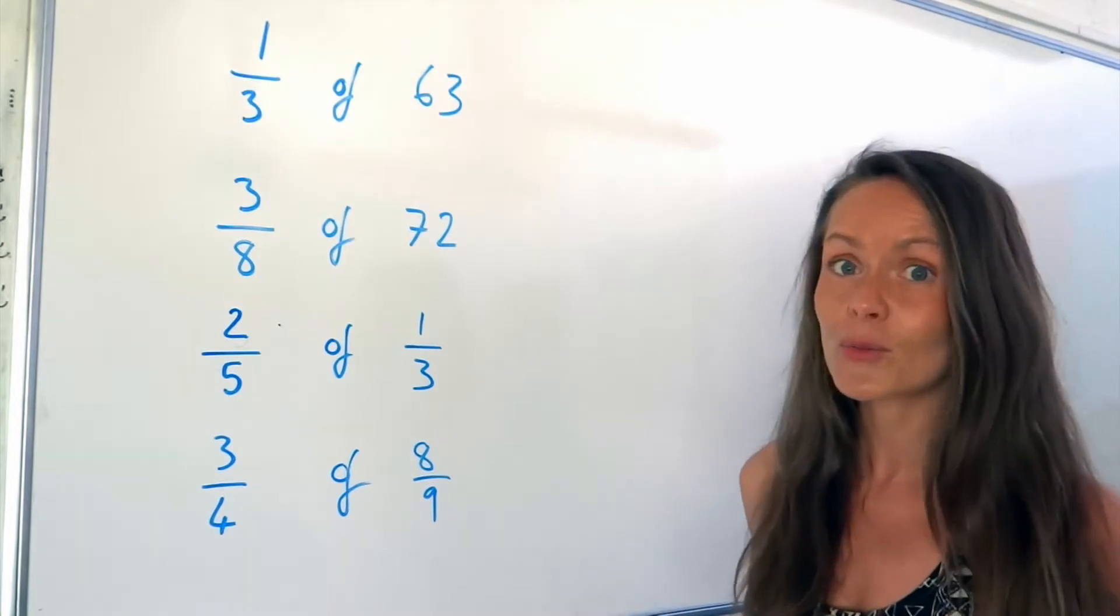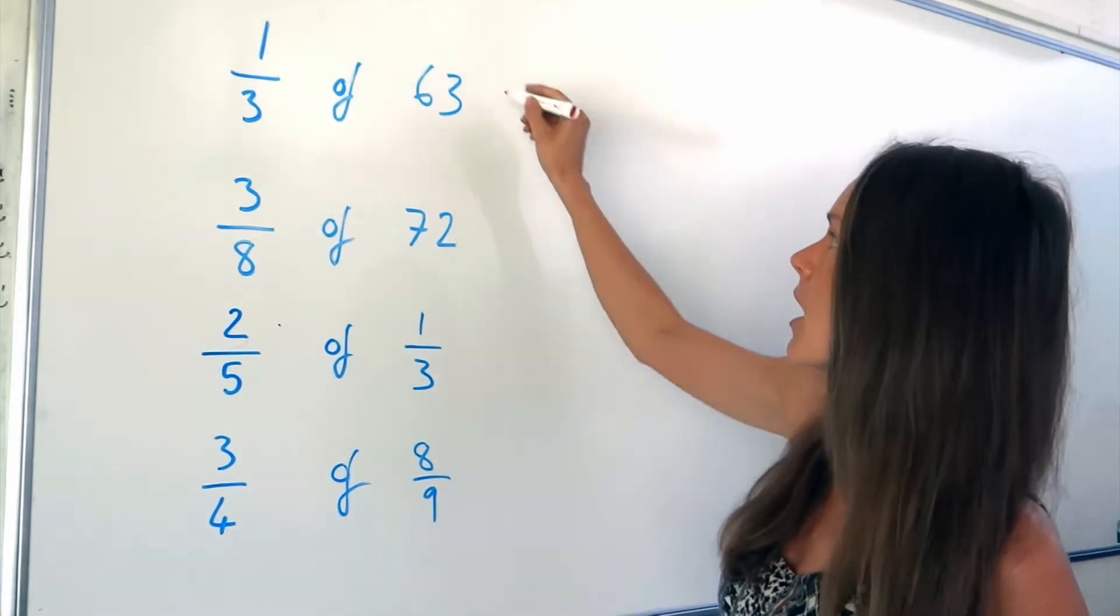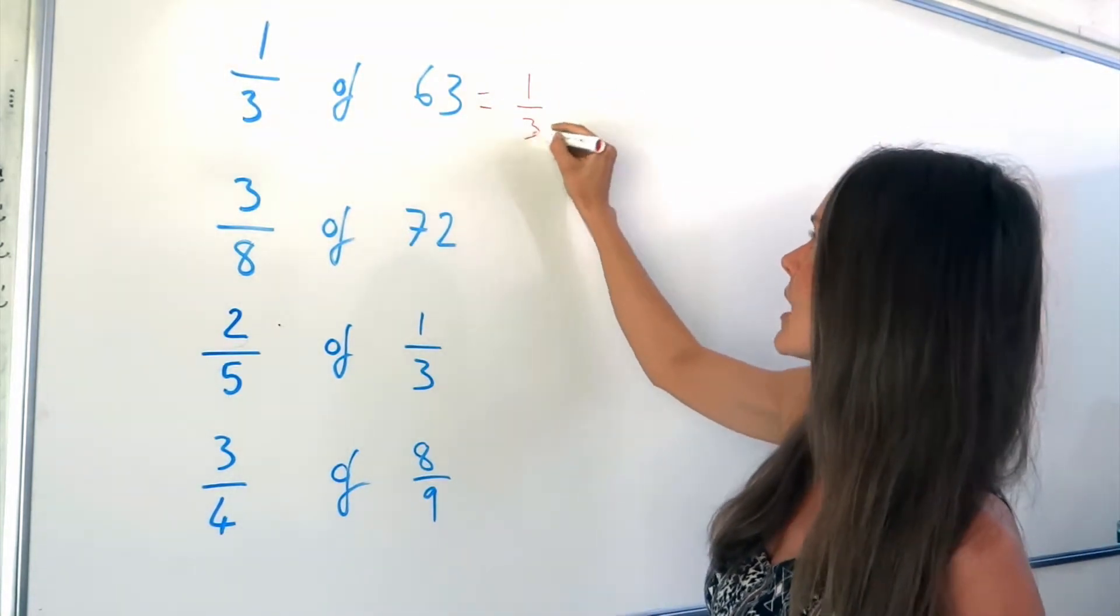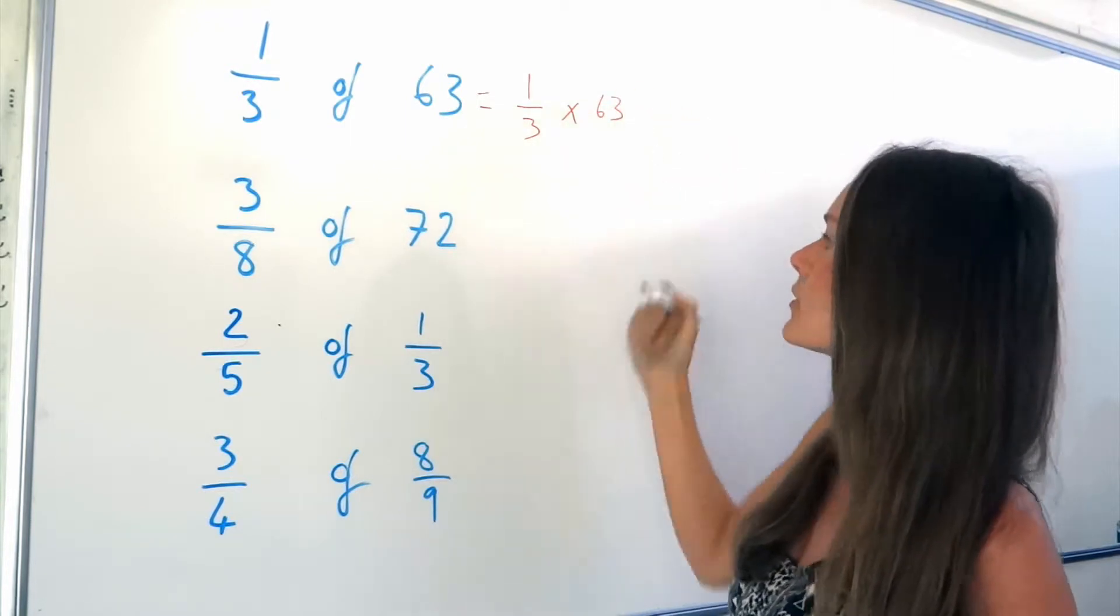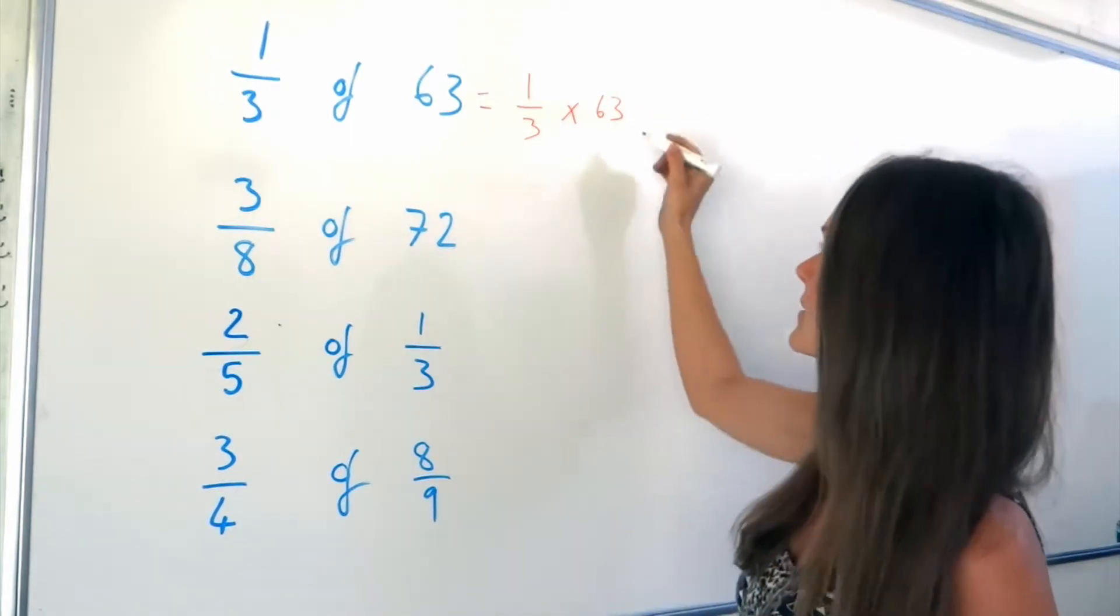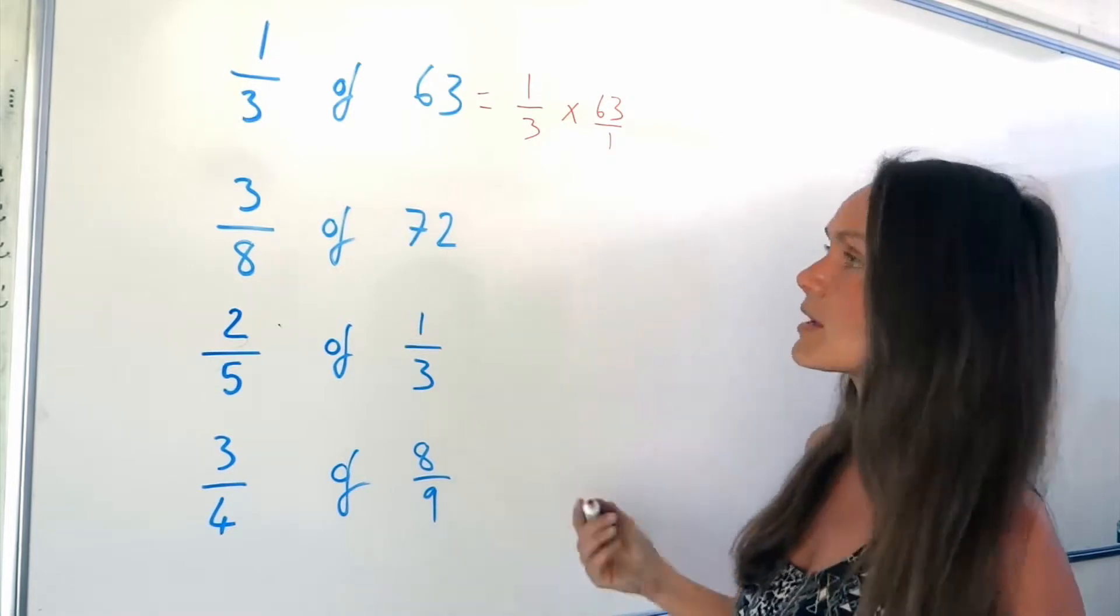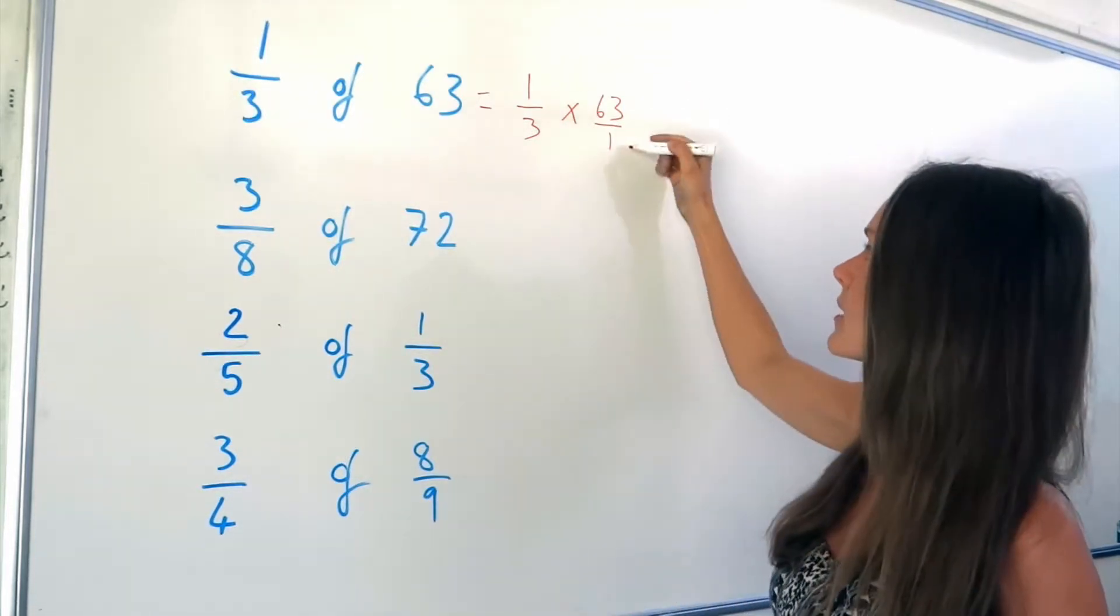So in the first one, if I have to work out one third of 63, I'm just multiplying them together. Now just remember, the number 63 is the same as writing 63 over 1. It's exactly the same thing.